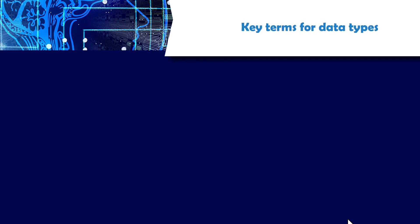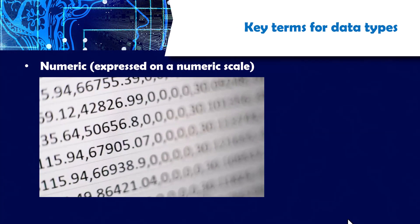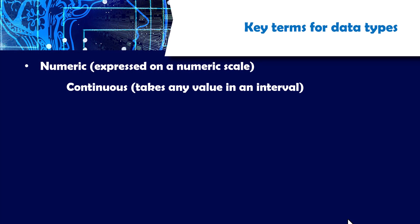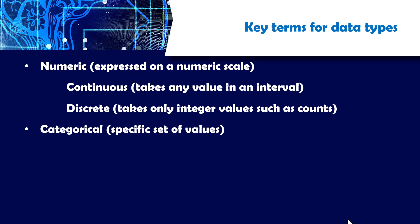Let's look at the key terms for data types. There is numeric data, as we have just seen, which is expressed on a numeric scale. It can be continuous, taking any value in an interval. It can be discrete, which takes on an integer such as counts. Then data can be categorical, which is a specific set of values. For example, when I say male or female, that is categorical. It can be binary, yes or no, male or female. It can be ordinal, it can be nominal.